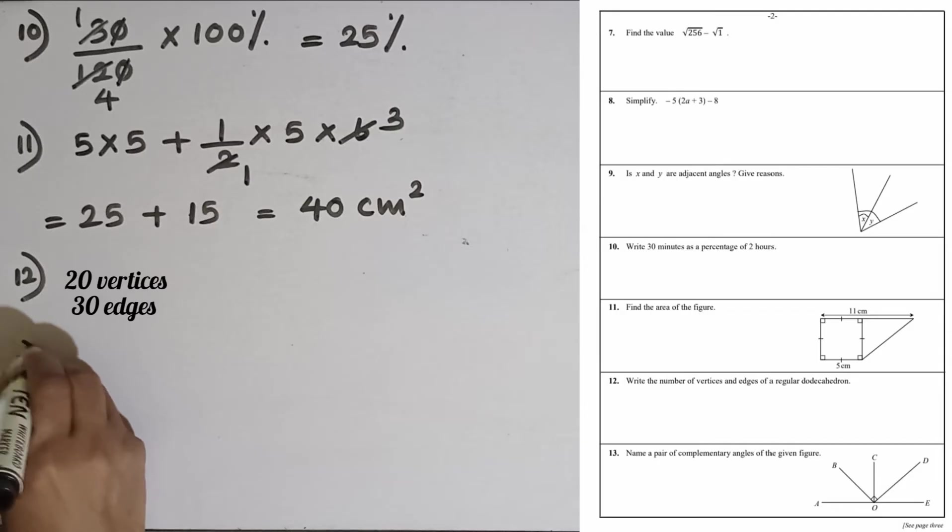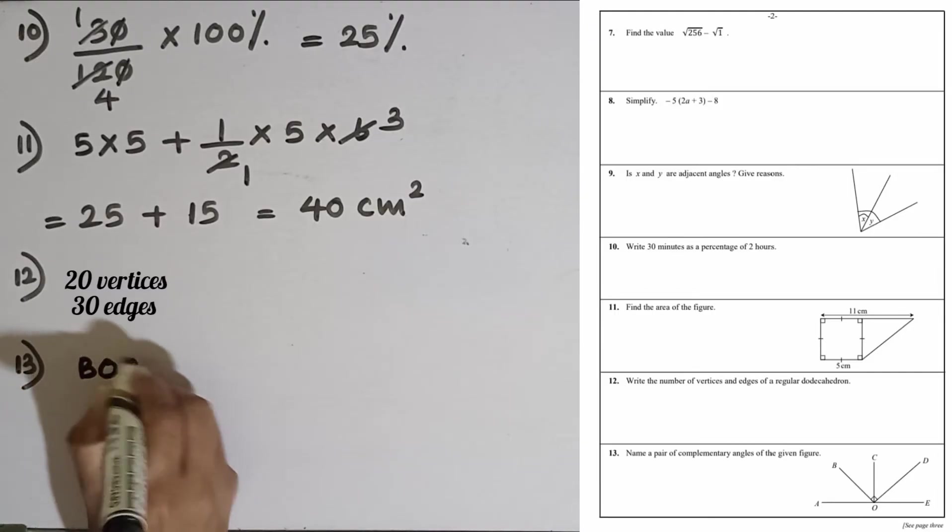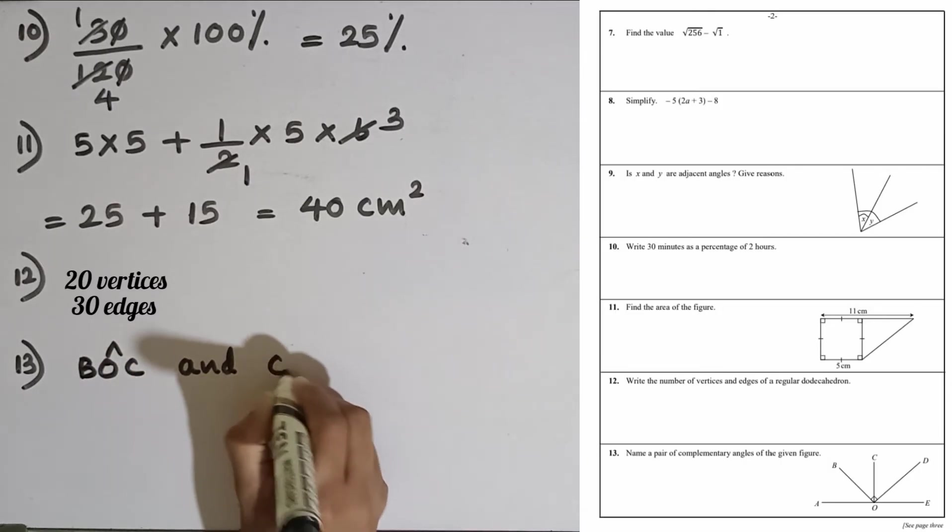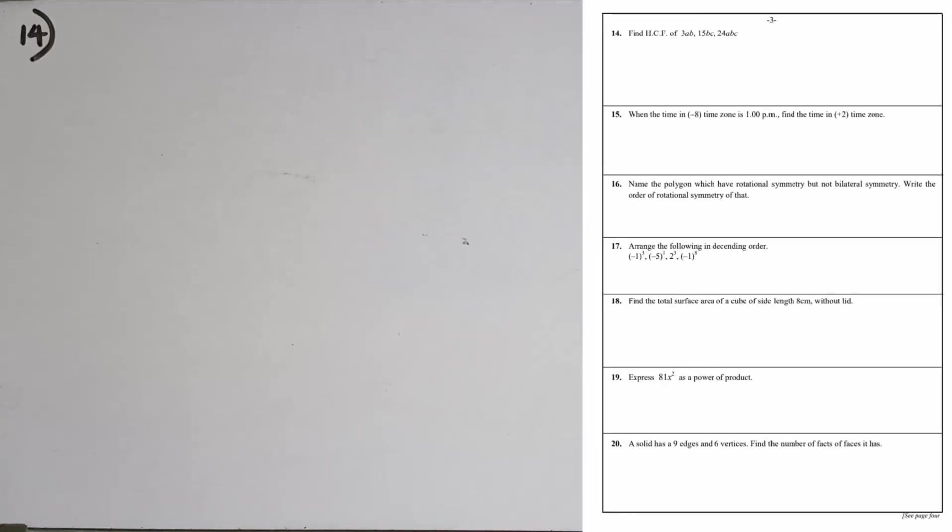Question number 13: Name a pair of complementary angles of the given figure. Complementary means the sum must be equal to 90 degrees. So we can take two angles here, BOC angle and COD angle. As the sum of the angles on a straight line is equal to 180 degrees, the sum of the other two angles, that means AOB and DOE, also equal to 90 degrees. So we can take this pair also. They are not given complementary adjacent, so then no need to be adjacent angles, only complementary angles.